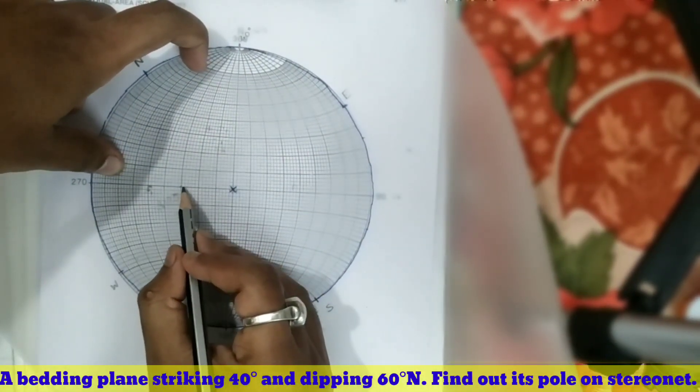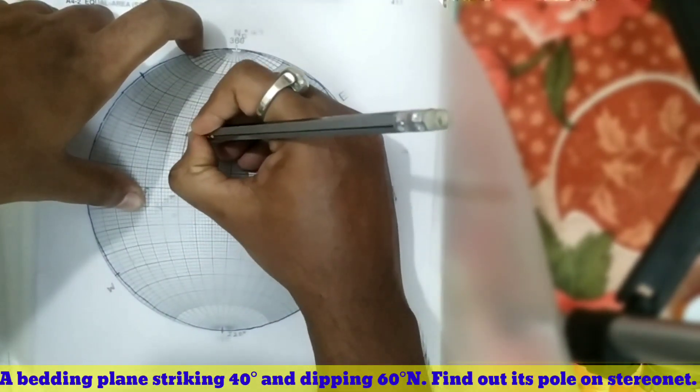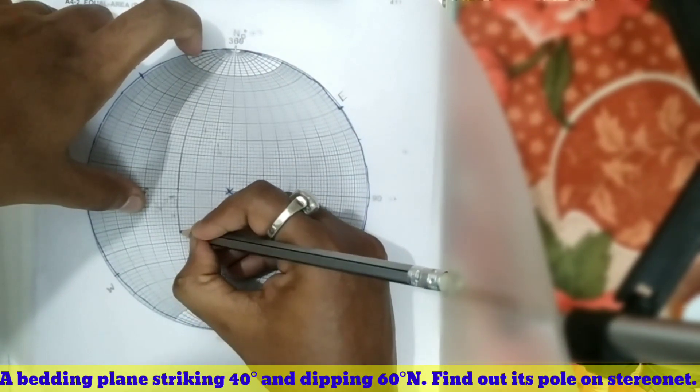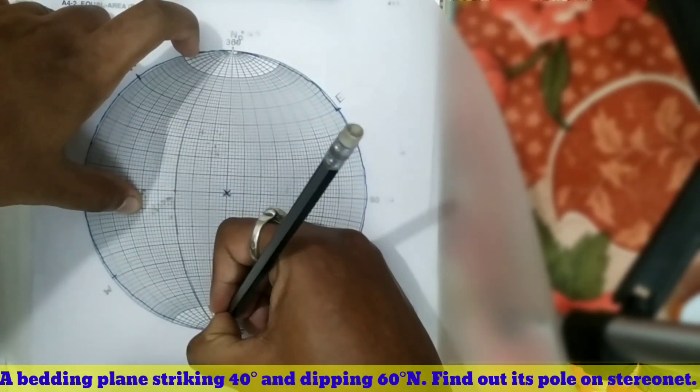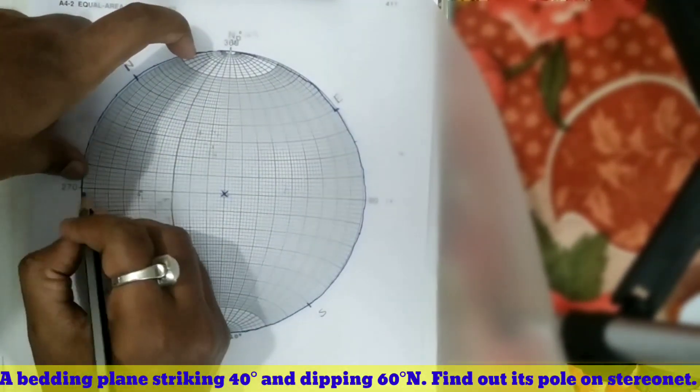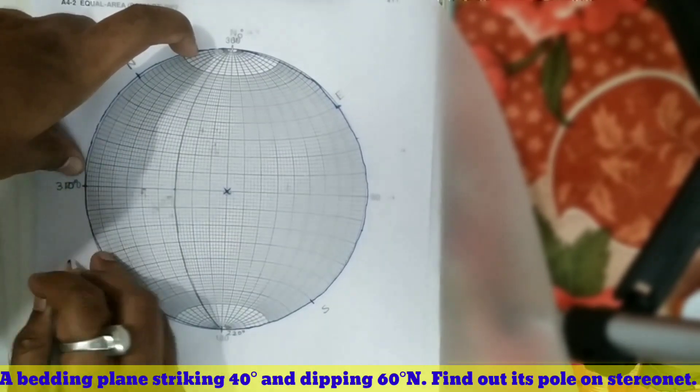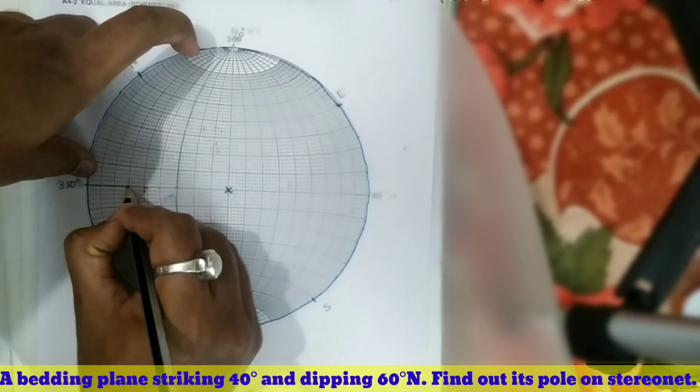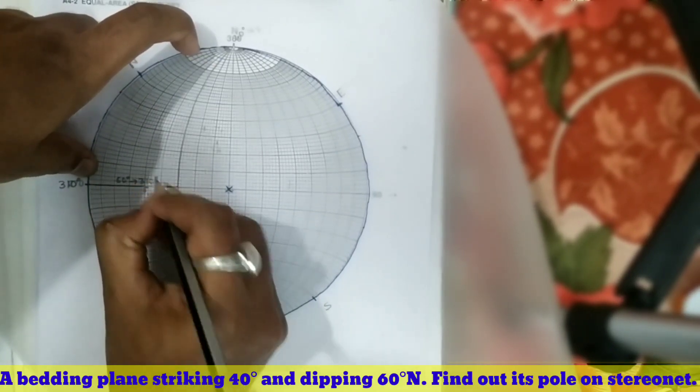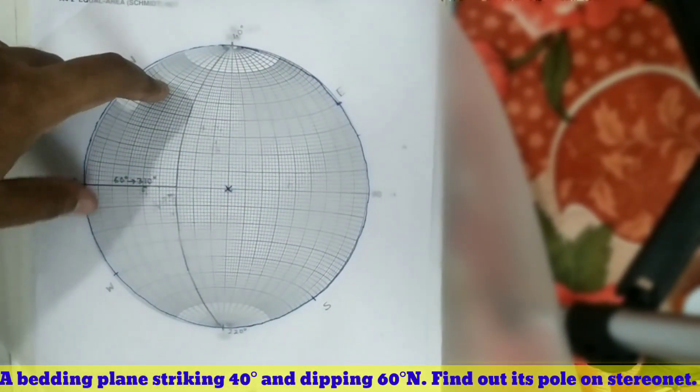So 90, 80, 70, 60 - you can count in this way too. Mark this line in this direction, here you have to write 60° towards 310°. Now we already calculated the pole numerically.